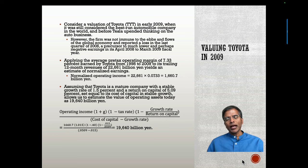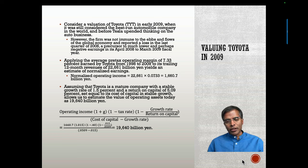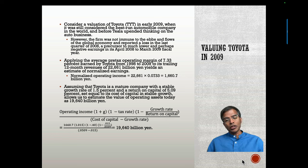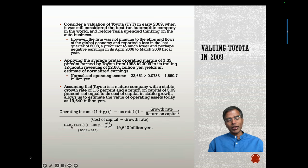Here's how I valued Toyota. I looked at the average pre-tax operating margin that Toyota had between 1998 and 2009. That average margin was 7.33%. Then I took their actual 12-month revenues and multiplied by that margin, normalizing based on revenues today. When I do that, I come up with a normalized operating income of 1,661 million. I did my entire valuation as if that were my earnings for Toyota. Toyota was already one of the largest automobile companies in the world, so I assumed it was in stable growth, growing at 1.5% — but growing its normalized income, not its last year's income.